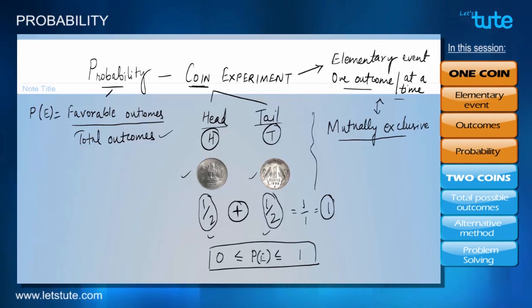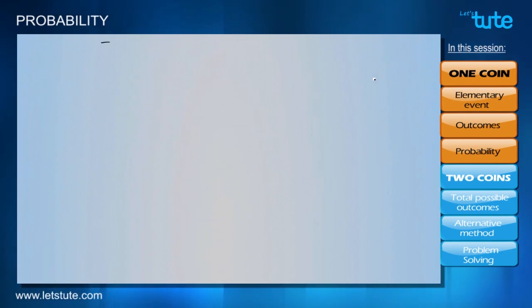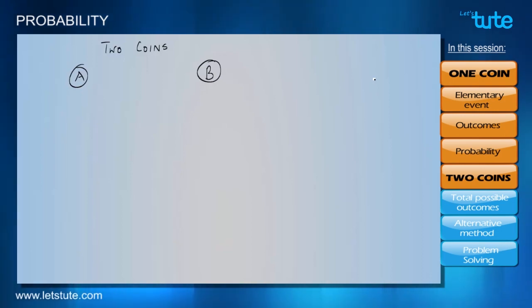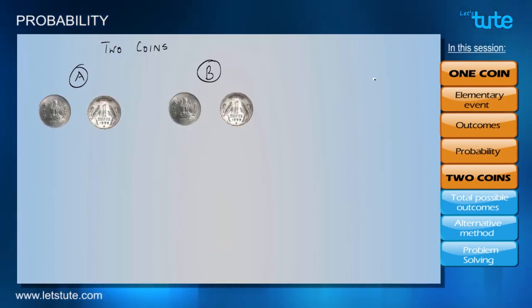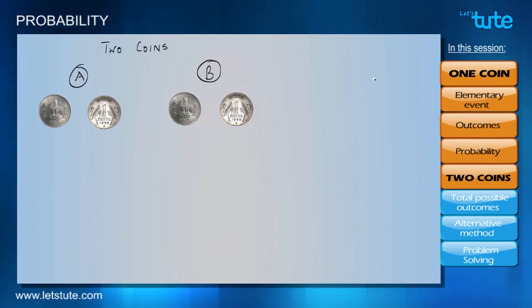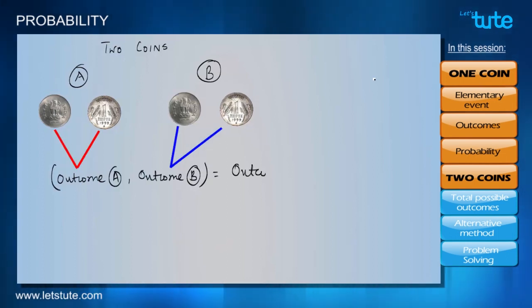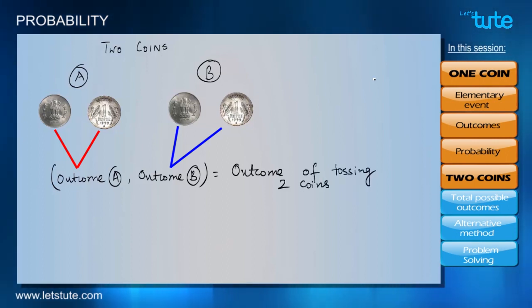Now let's make it more interesting and talk about probabilities associated with two coins. We'll name our coins A and B, each having the same outcomes — heads and tails. To find the possible outcomes from tossing two coins, we'll group the outcome from coin A with the outcome from coin B.